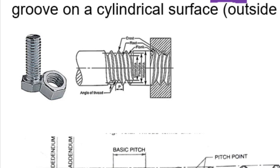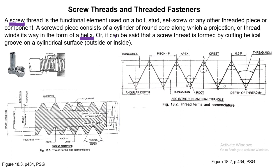A screw thread is formed by cutting a helical groove on a cylindrical surface, either outside or inside. Here you can see a bolt and a nut. The bolt has helical threads cut externally on the outside, while the nut has threads cut internally on the inside.